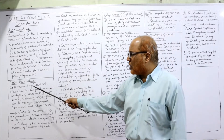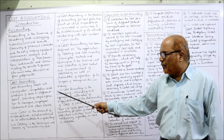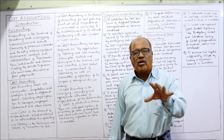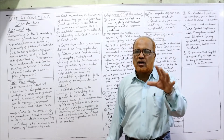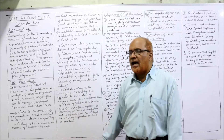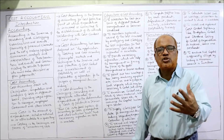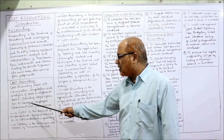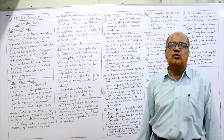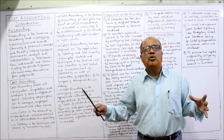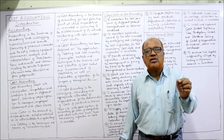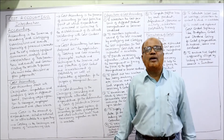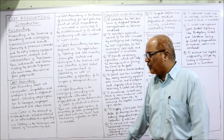Cost accounting deals with classification, computation, and analysis of cost on different bases. Cost means the expenditure incurred in producing goods or supplying services. Cost accounting provides useful information to managers, employees, government, and other users. We record the cost, classify the cost, analyze the cost, and provide the information to different parties so they can take decisions.